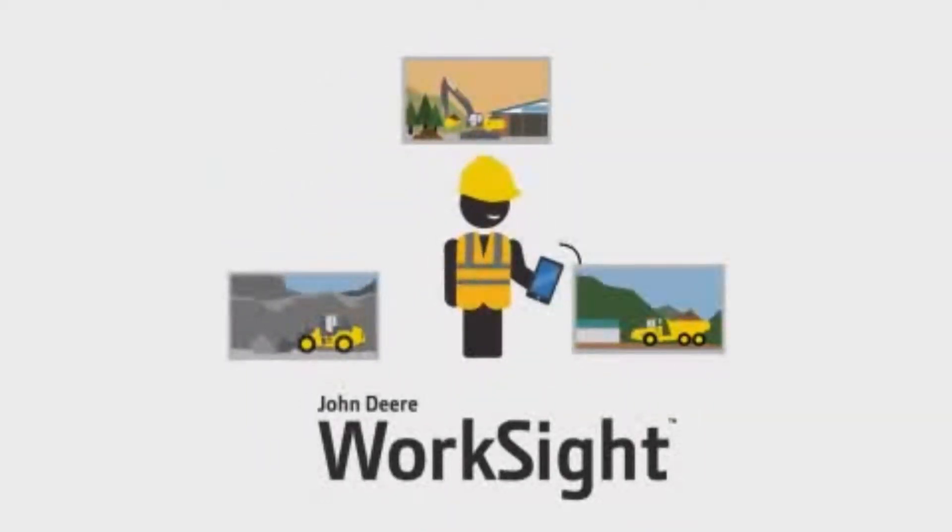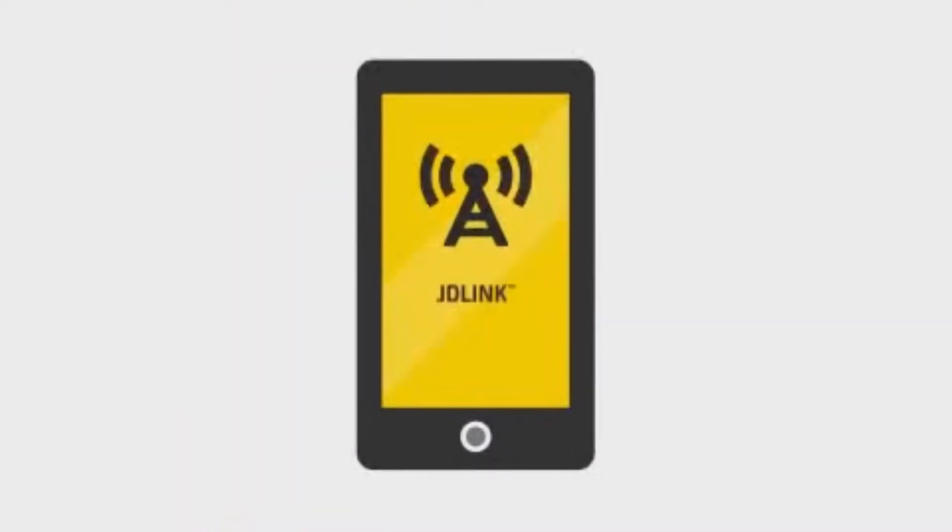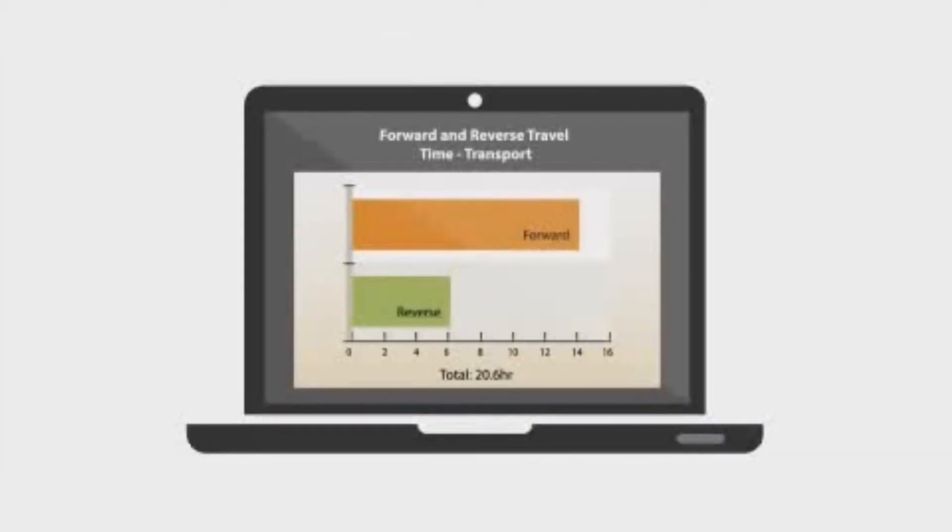John Deere Worksite is your eye on the ground, helping you optimize machines. JDLink Telematics collects data on the operation and performance of all of your machines across your job sites.